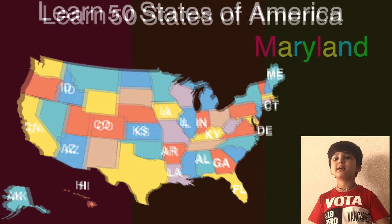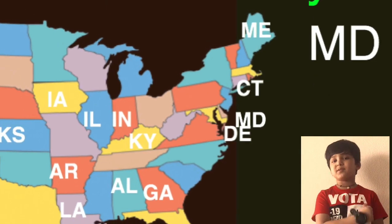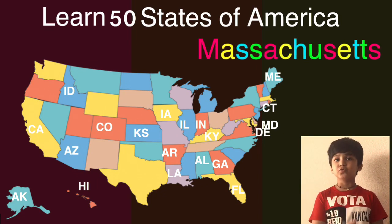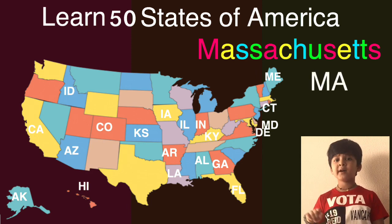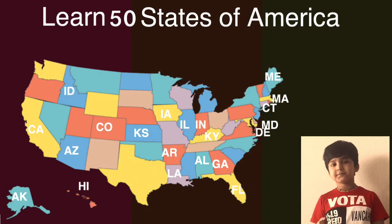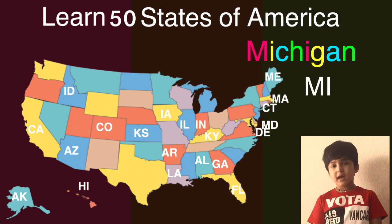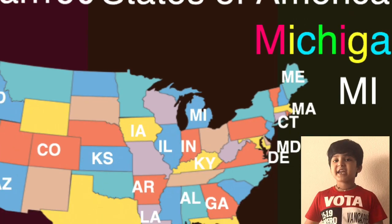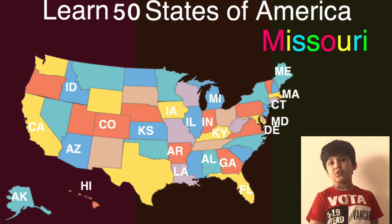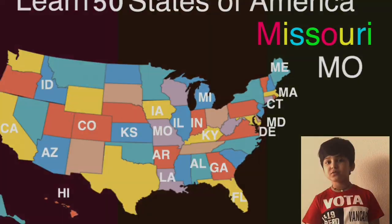The next one is Massachusetts and the short one is MA. Here comes Massachusetts on the map, can you guess what will come next? The next one is Michigan and the short one is MI. Here comes Michigan on the map, can you guess what will come next? The next one is Missouri and the short one is MO. Here comes Missouri on the map, can you guess what will come next?